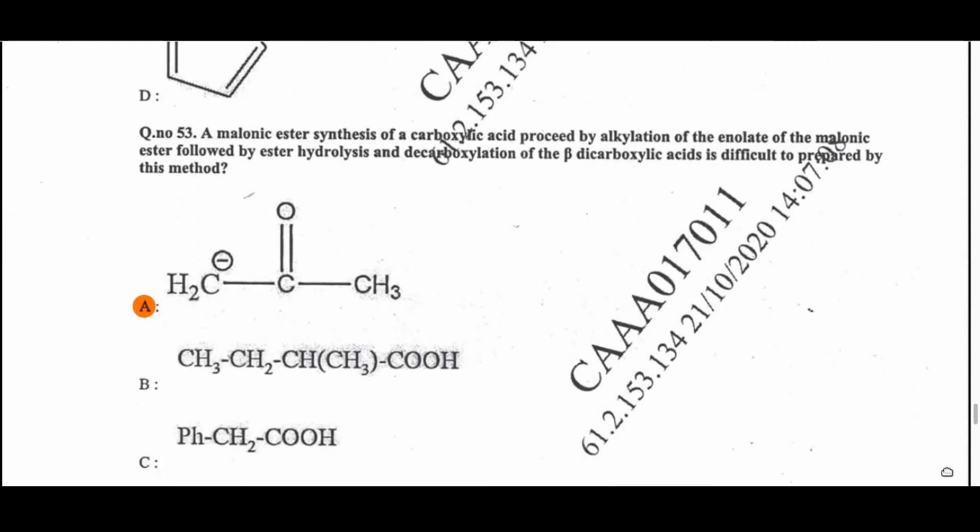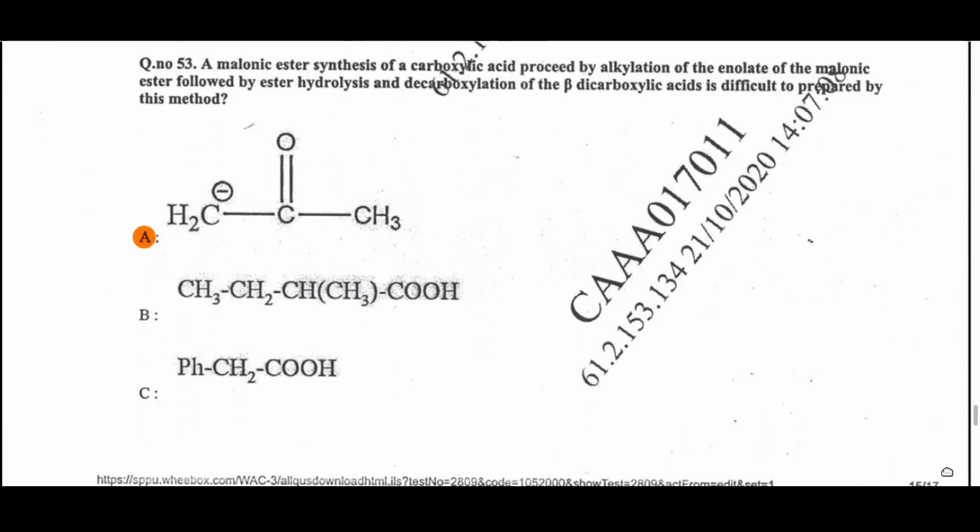Question 53: Malonic ester synthesis of a carboxylic acid proceeds by alkylation of the enolate of malonic ester, followed by ester hydrolysis and decarboxylation of the beta-dicarboxylic acid. In malonic ester synthesis, first a carbanion is formed, then alkylation and related processes occur. Option A is the correct option. Question 54: Isoprene units in naturally occurring terpenoids are joined head-to-tail — that is the isoprene rule.